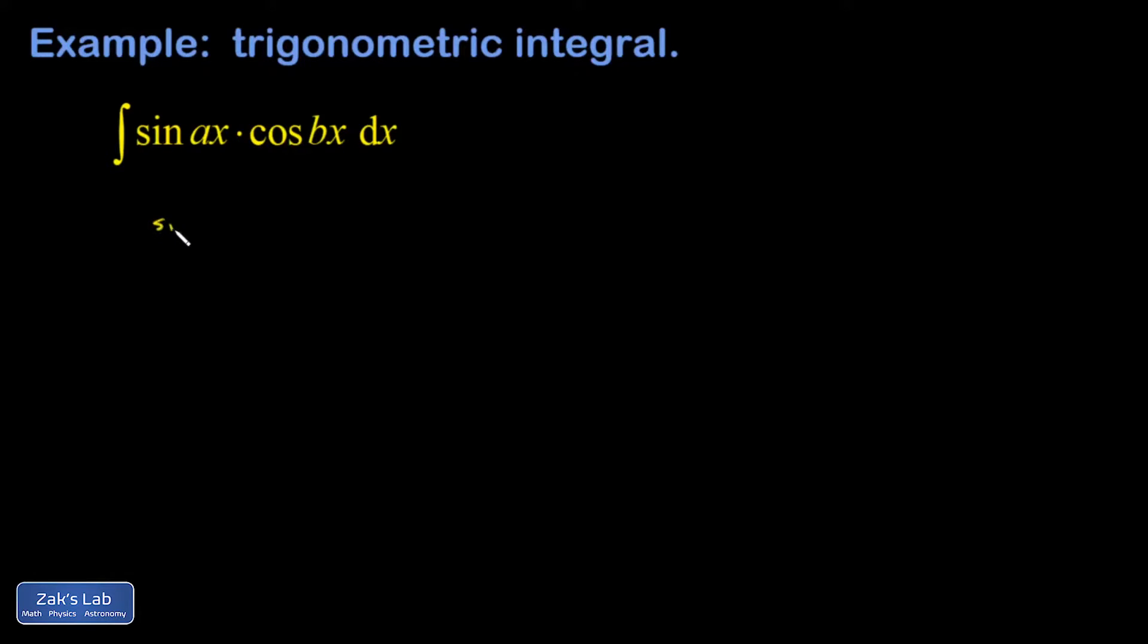Where this comes from is the formula for the sine of a sum and difference of two angles. Sine of theta plus or minus phi is sine theta cosine phi plus or minus cosine theta sine phi.